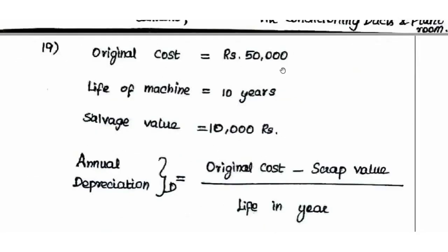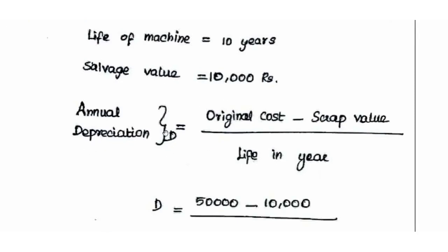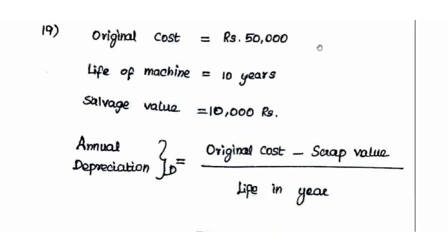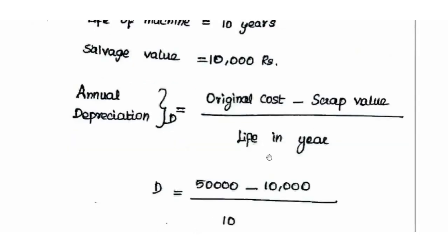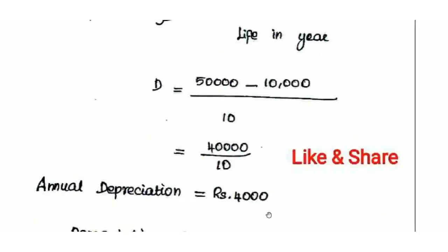Original cost of the machine is Rs. 50,000. Useful life is 10 years. Salvage value is Rs. 10,000. Straight line method formula: Annual Depreciation = (Original Cost − Salvage Value) ÷ Life in years = (50,000 − 10,000) ÷ 10 = Rs. 4,000 per year.